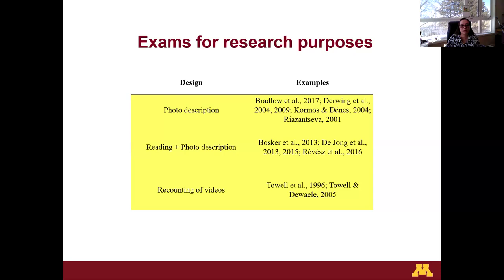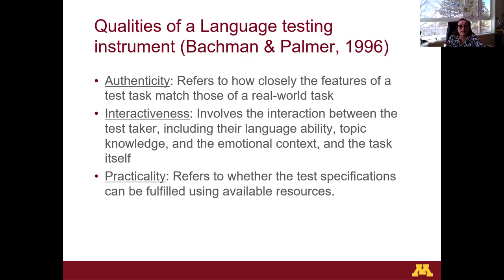However, in accordance with Bachman and Palmer, language testing instruments should possess certain qualities that prompt reconsideration of current formats. These qualities include authenticity, which refers to how closely the test task mirrors real-world tasks; interactiveness, which involves the interaction between the test taker, their language ability, topic knowledge, emotional context, and the task itself; and practicality, which pertains to whether the test specifications can be met with available resources. A language testing instrument should feature tasks that replicate real-world scenarios, encourage interaction, and can be administered with ease.